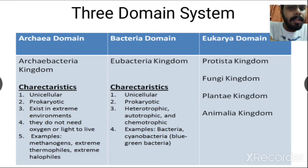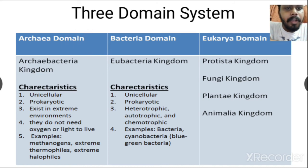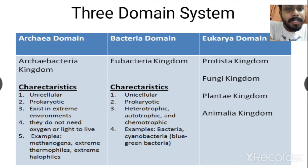Woese divided Archaebacteria and Bacteria into separate domains because of differences in their characteristics. The Archaea domain organisms are unicellular prokaryotes that exist in extreme environments, surviving at very low or very high temperatures. They do not need oxygen or light to live. Examples include methanogens, extreme thermophiles, and extreme halophiles.